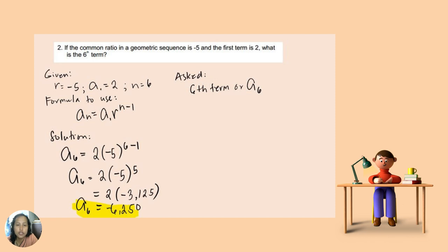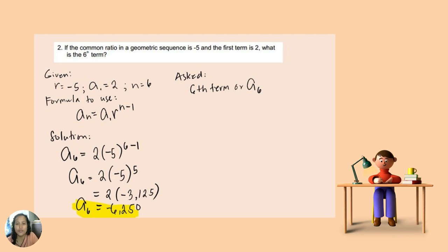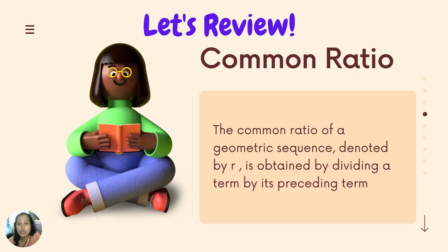The formula we are going to use is the formula for finding the nth term of a geometric sequence: a sub n is equal to the first term times the common ratio raised to n minus one. So a sub six equals two times negative five raised to six minus one, which gives us two times negative five raised to five. We solve the exponent first: negative five raised to five gives us negative three thousand one hundred twenty-five. Multiplying by two gives us negative six thousand two hundred fifty. So the sixth term is negative six thousand two hundred fifty.